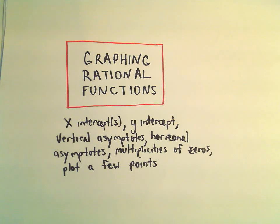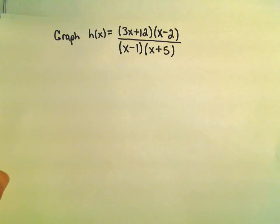In this video I'm going to do one more example of graphing a rational function by considering x-intercepts, y-intercepts, vertical asymptotes, horizontal asymptotes, multiplicities of the zeros, and by plotting a few points.